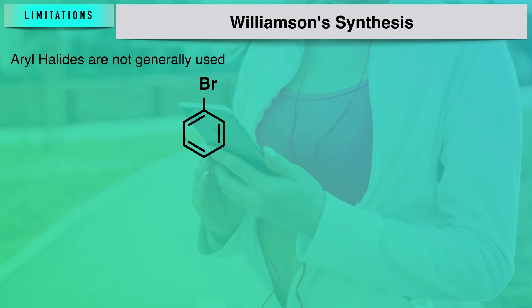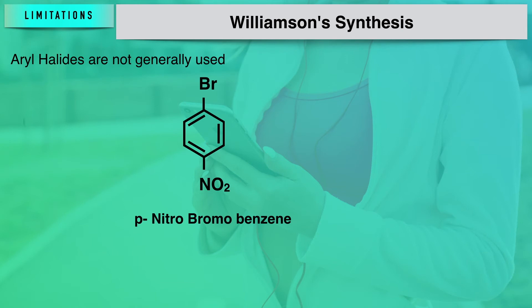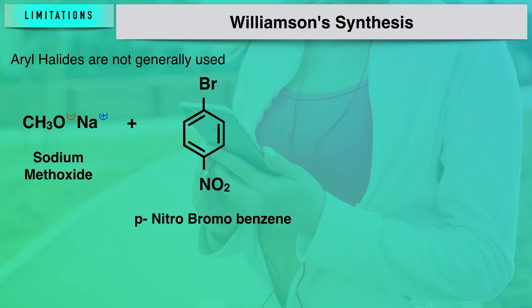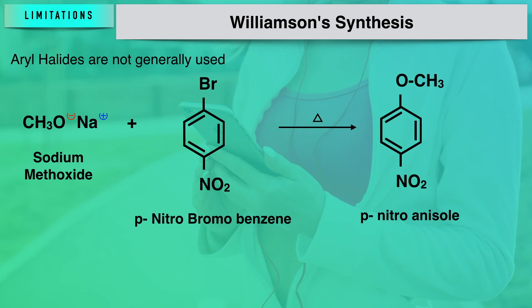There is one exception: if the halogen is activated by the presence of electron withdrawing groups, as in para-nitrobromobenzene — where the nitro group at the para position activates the bromine — then such aryl halides can be used in Williamson synthesis. Para-nitrobromobenzene interacts with sodium methoxide and converts into para-nitroanisole.